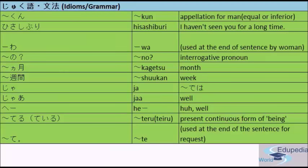The next one is 'ka-getsu' — a suffix to indicate month. For example, 'ikka-getsu', 'nika-getsu', meaning one month, two months, and so on. The next one is 'shukan' — a suffix for weeks: 'isshu-kan', 'nishukan' meaning one week, two weeks, and so on. The next one is 'ja', equivalent to 'dewa' — meaning 'well'. This is a colloquial form.